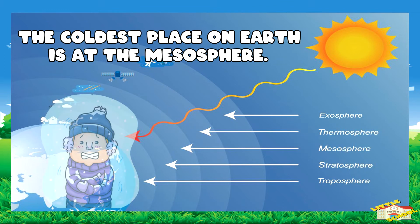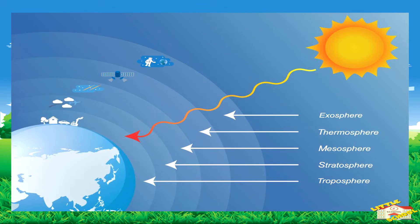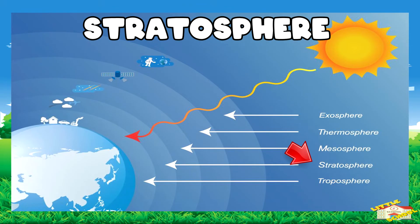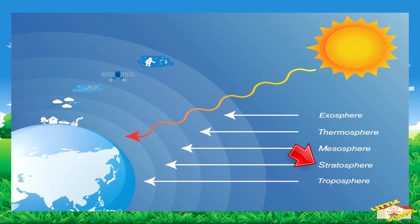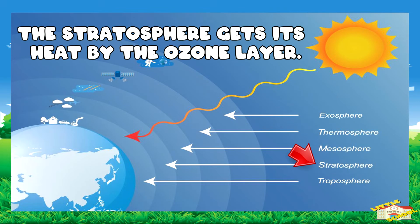The coldest place on Earth is at the top of the mesosphere. The stratosphere gets its heat from the ozone layer absorbing radiation from the Sun, unlike the troposphere.